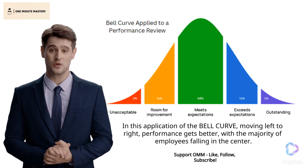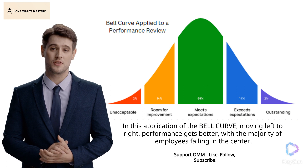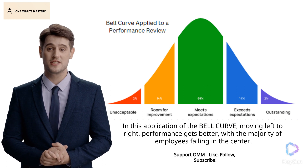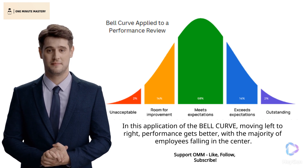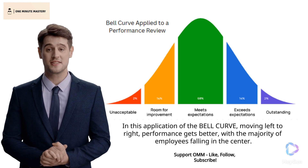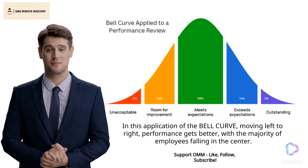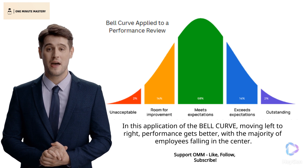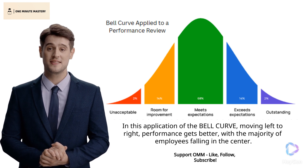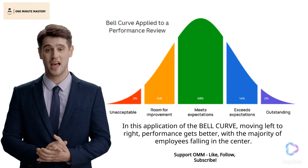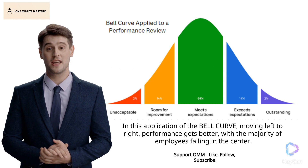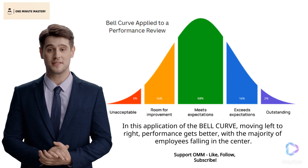Imagine a symmetrical curve that resembles a bell, known as a bell curve or normal distribution. This statistical concept is characterized by a peak at the center, which represents the mean or average of a data set, and a gradual decline on both sides.